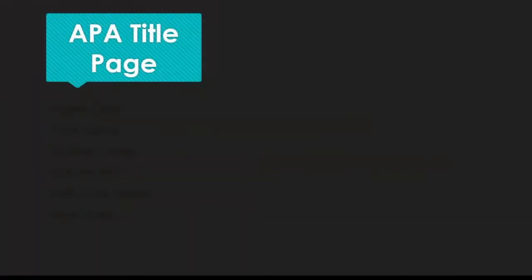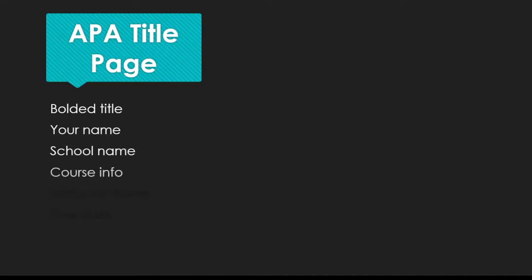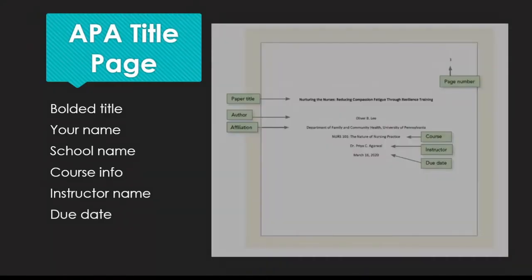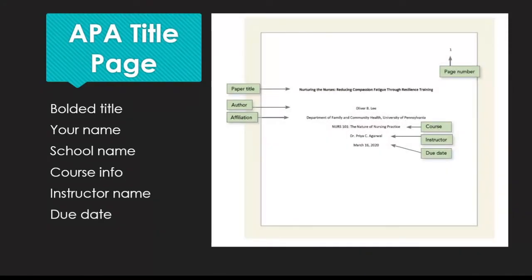Your information will appear alone on the first page of the paper, called the title page. This page will include the title of your paper bolded, your name, the name of the school, your course number and title, your instructor's name, and the due date for your assignment. All of this is centered horizontally and vertically on your first page. You'll also want to include a page number in the top right header of each page, including this one. Just make sure the font for your page number matches whatever you pick for the rest of your paper.